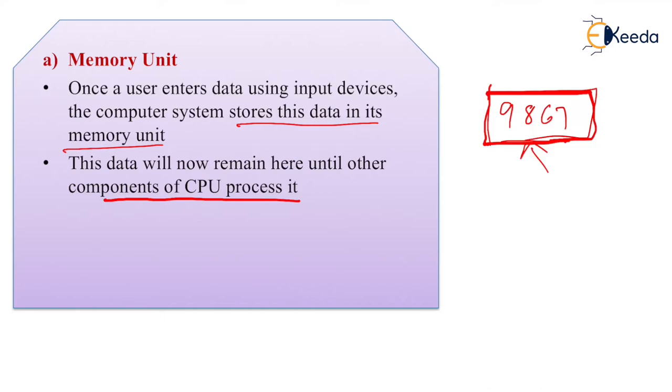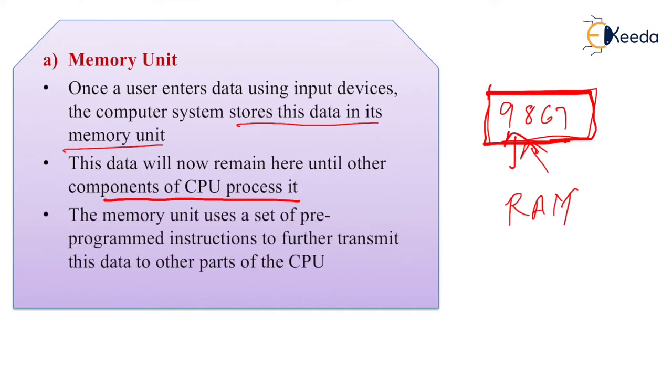And whenever the processor requires this data for the processing, that time the computer or the CPU can accept the data from the memory unit. So we can say a memory which is used by the memory unit is internal memory. We can say it is a RAM that is random access memory. The memory unit uses a set of preprogram instruction to further transmit this data to other parts of the CPU.